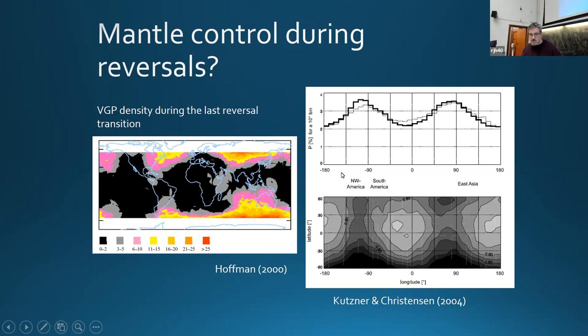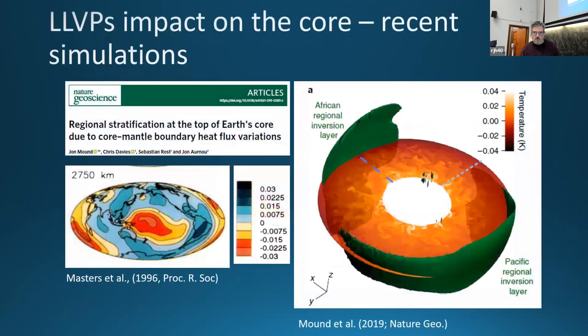In terms of geodynamo simulations, they've been able to reproduce this very qualitatively for some time. Kutzner and Christensen showed that when you overlay a heterogeneous heat flow condition on their simulations, you tend to get more VGPs happening where you've got the higher heat flow away from the LLVPs.